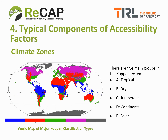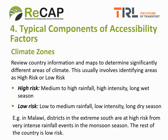Climate zones are also a useful component of accessibility factors. There are usually several sources of climate and weather data within a country. Whoever calculates RAI should consult the National Meteorology Department for details of weather data, but online sources such as the world map of major Koppen classification types, as shown on this slide, can be a useful resource for general weather data. Koppen also provides detailed maps for each country. Country information and maps can be used to determine significantly different zones of climate in terms of the risk to deterioration and availability of roads. It's recommended that the country is divided into two categories — high risk and low risk. For example, in Malawi, districts in the extreme south are at high risk from very intense rainfall events in the monsoon season, while the rest of the country is generally dry and therefore at low risk.